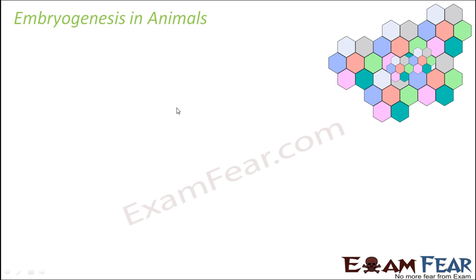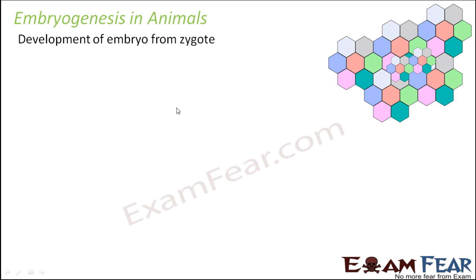We understood that the zygote is going to undergo some mitotic or meiotic division to form the individual. But before a proper individual is formed, there is the early stage called embryo. So how is embryo formed from zygote? It is the development of embryo from zygote.